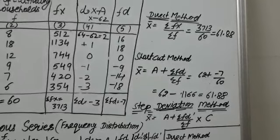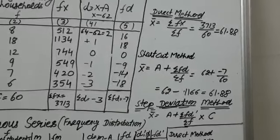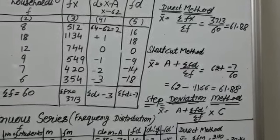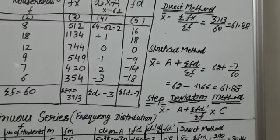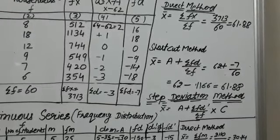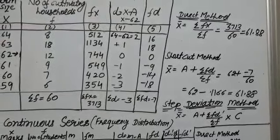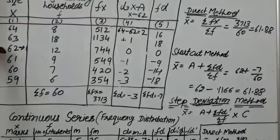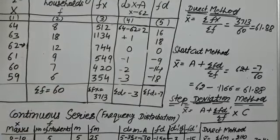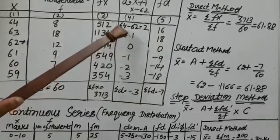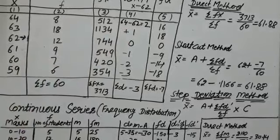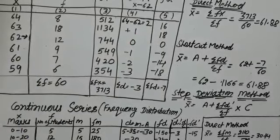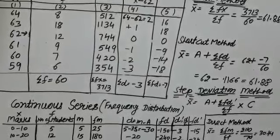As you know, there are 3 methods of calculating arithmetic mean. Now we shall calculate it by shortcut method. In order to calculate by shortcut method, we will calculate d — that is, we will take the deviation by assuming mean. Here, assumed mean is taken as 62. So we will calculate x minus a, which is 64 minus 62 equals 2, then 63 minus 62 equals 1, and in this way we will get d.